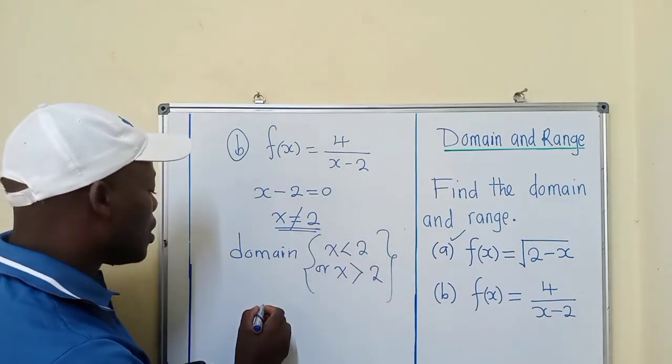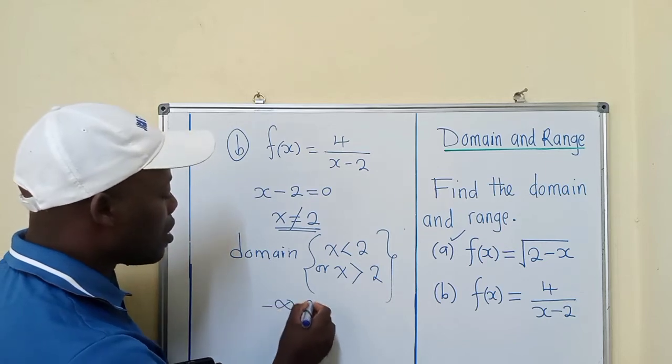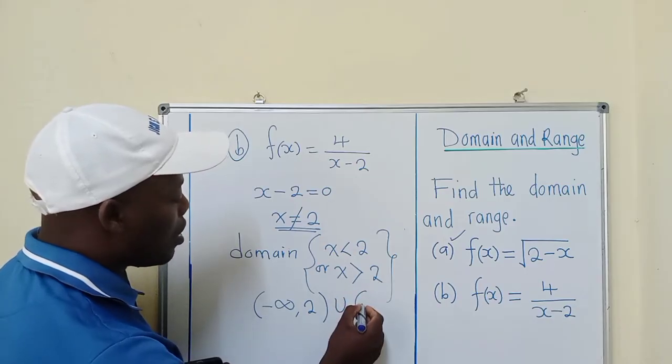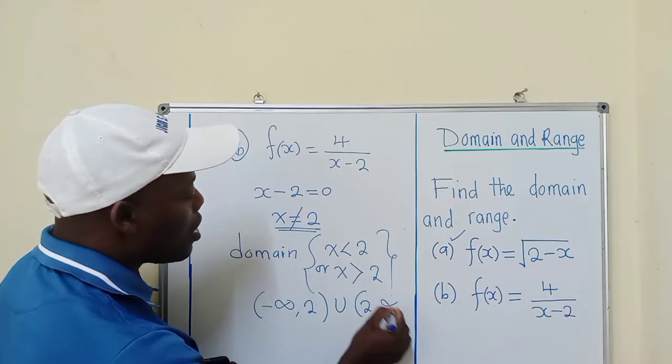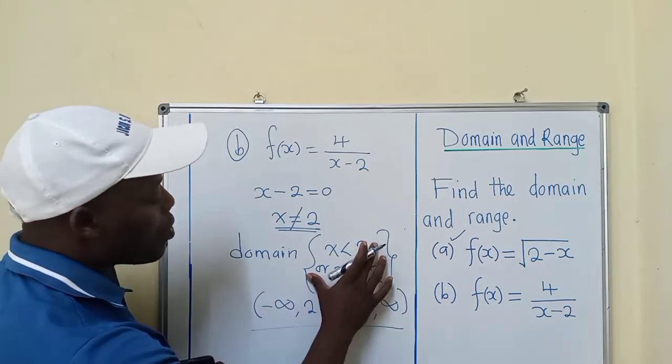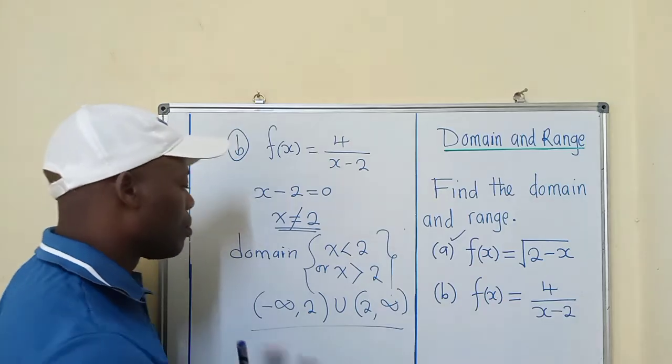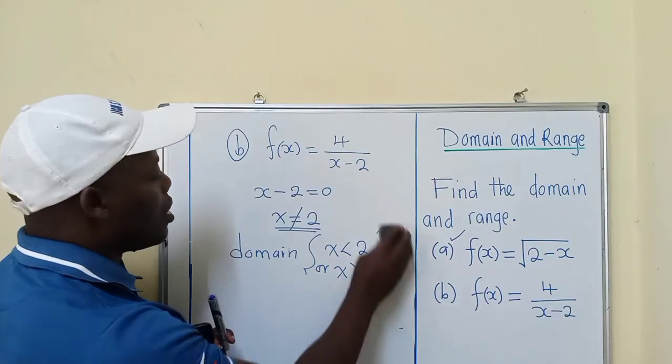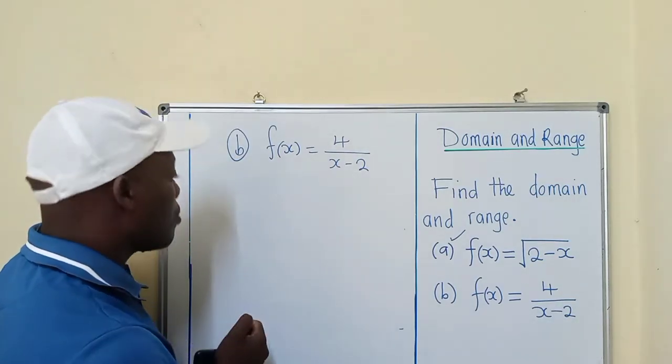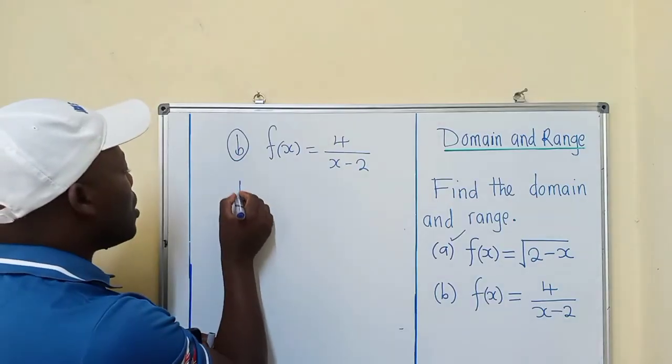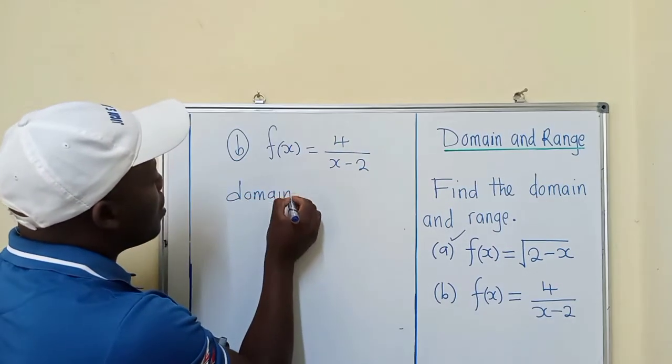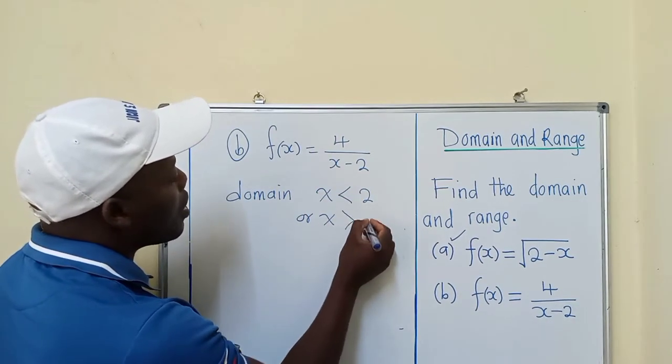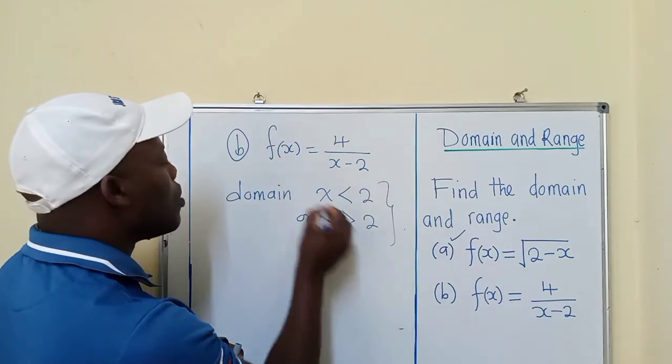If you don't want to write them in this form, you can use interval notation: negative infinity to 2, union 2 to infinity. This is also a valid solution. So our domain here is x < 2 or x > 2.